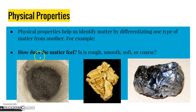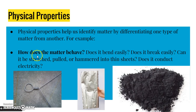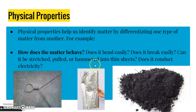Physical properties help us differentiate — meaning telling the difference between — types of matter. For example, how does the matter feel? It may be rough, smooth, soft, or coarse. How does the matter behave? Does it bend easily like this wire, or does it break easily? Can it be stretched, pulled, or hammered into thin sheets like this aluminum foil? Does it conduct electricity?